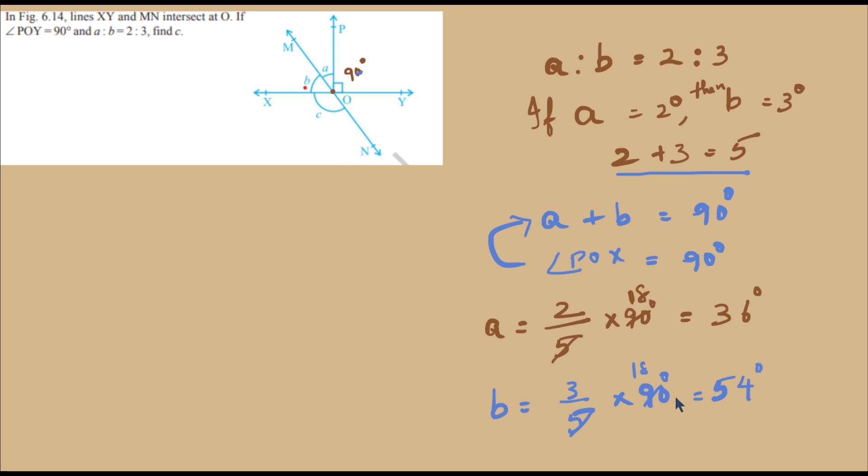Now we know angle A is 36 degrees and angle B is 54 degrees, but we need to find angle C. Angle XON is angle C, and MOX is angle B. Since MN is a straight line, the angle around O is 180 degrees, which means B plus C equals 180 degrees. These are supplementary angles in a straight line.